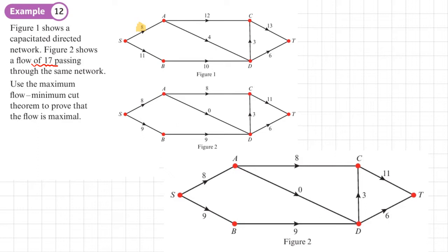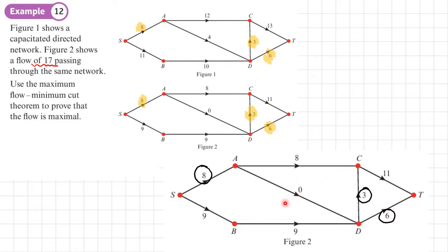The first step is to identify which arcs are saturated. Arc SA is saturated, arc DC has capacity and flow both equal to 3 so it is saturated — note that the textbook may show 7 but this was corrected to 3. Arc DT is also saturated. We mark these saturated arcs on the diagram.